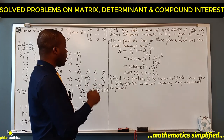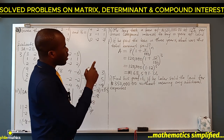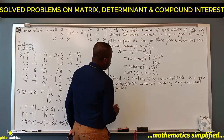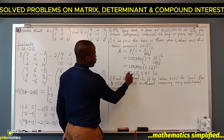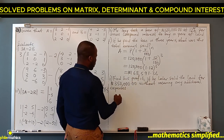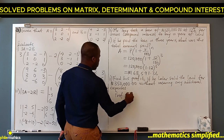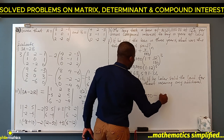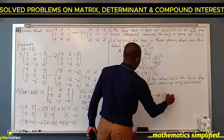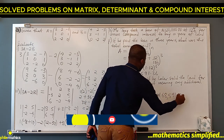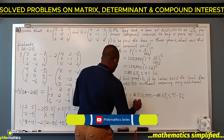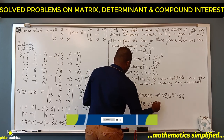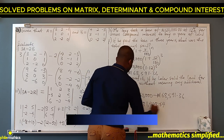Question two asks: find his profit if he later sold the land for 350,000, having bought it at 120,000 without incurring any additional expenses. So profit = 350,000 minus the amount he paid back = 350,000 - 168,591.36 = 181,408.64. So this is his profit.